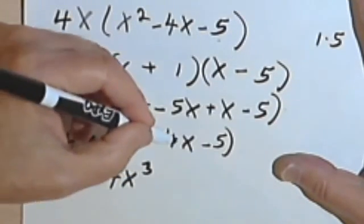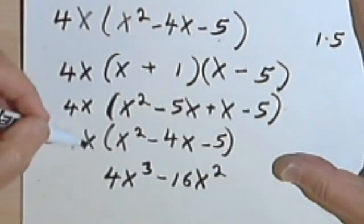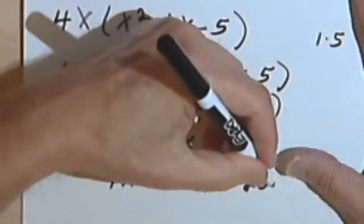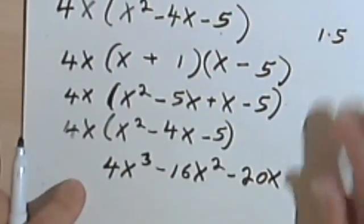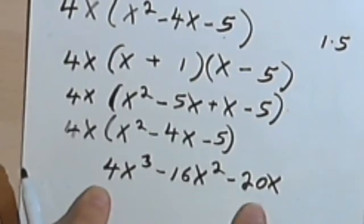4x times negative 4x is negative 16x squared, and 4x times negative 5 is negative 20x. So I've got 4x to the third, minus 16x squared, minus 20x.